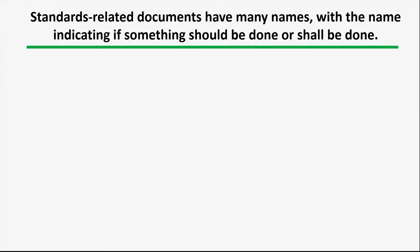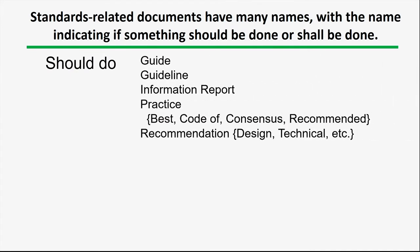I want to talk about standards-related documents. They have a number of names and vary on a variety of dimensions. Standards can be grouped into two broad categories. One describes what you should do — for example, guides, guidelines, information reports, or documents using the word practice, such as best practice, code of practice, consensus practice, recommended practice, and the same thing is true for recommendations.